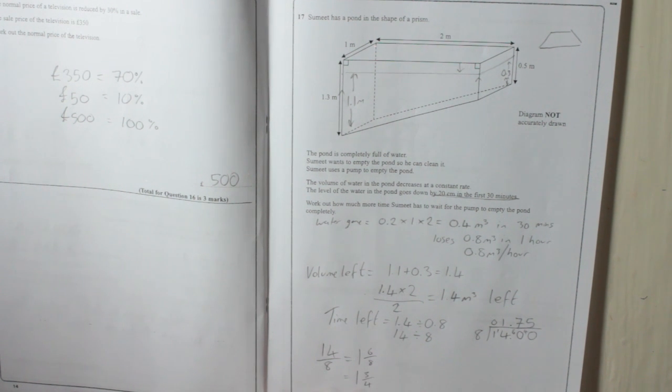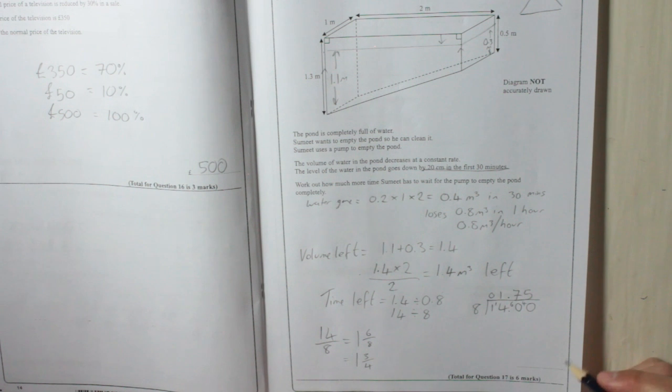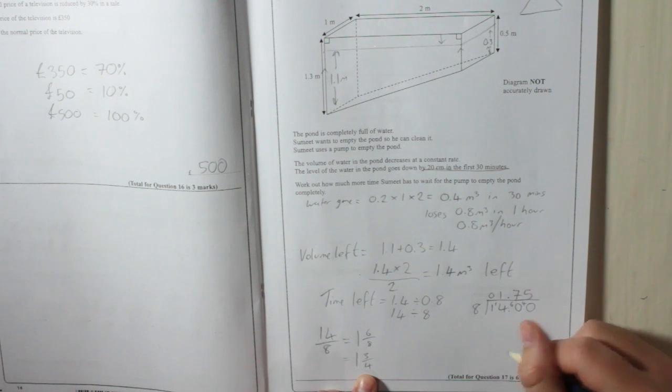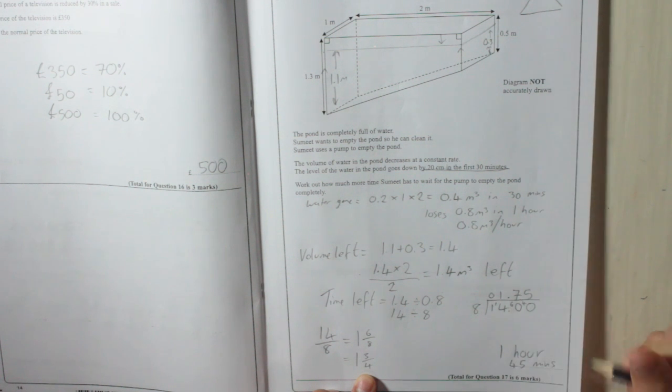That's how many hours it is. 1.75 hours, 1 and 3 quarter hours. You could still mess up here by saying it's going to be 1 hour and 75 minutes or something like that. What is 3 quarters of an hour? It is 1 hour and 45 minutes.